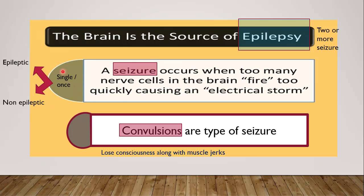A seizure can be a single seizure or single like activity, whereas epilepsy involves two or more seizures. Convulsion is a type of seizure. Seizure is associated with an electrical storm — meaning the brain fires too quickly, causing an electrical storm. Convulsions are basically associated with muscle jerks, whereas a seizure is electrical activity.